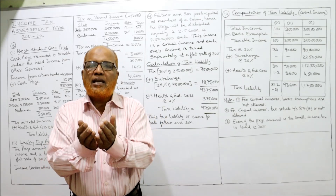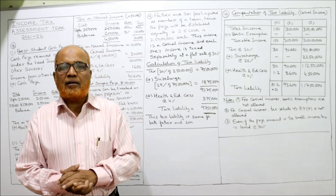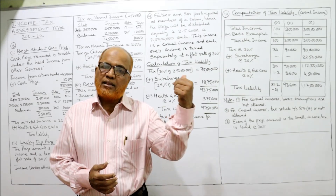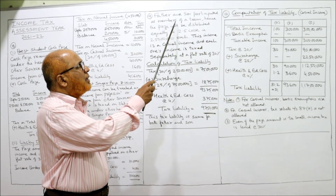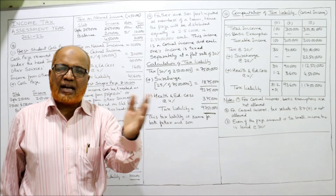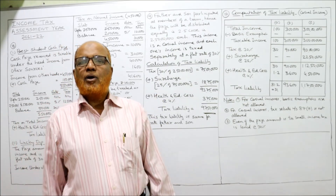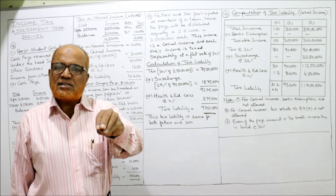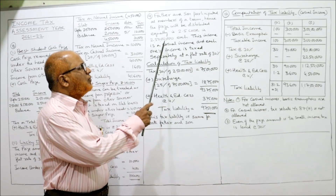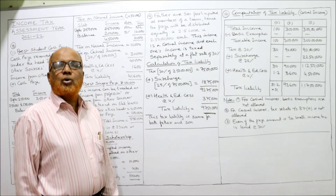Each of father and son gets 2 crore 50 lakh as casual income, taxable at a flat rate of 30%. Surcharge applies because income exceeds 2 crore. The rate of surcharge for income between 2 crore and 5 crore is 25%. Tax at 30% of 2.5 crore = 75 lakh. Surcharge at 25% of 75 lakh = 18,75,000. Total after surcharge = 93,75,000.